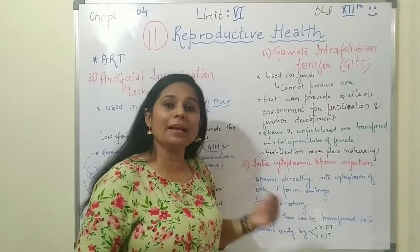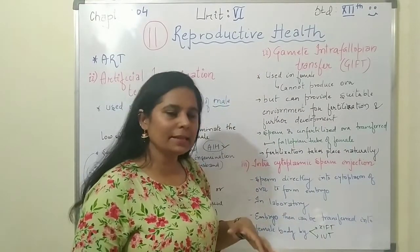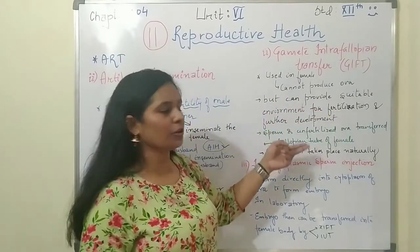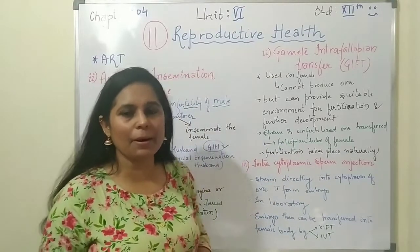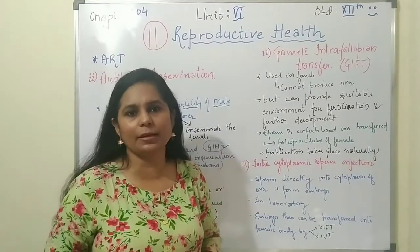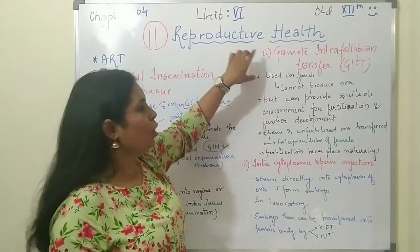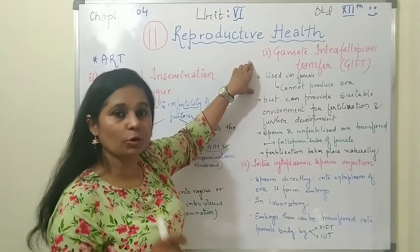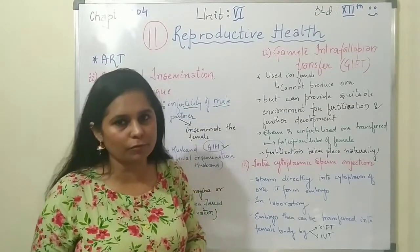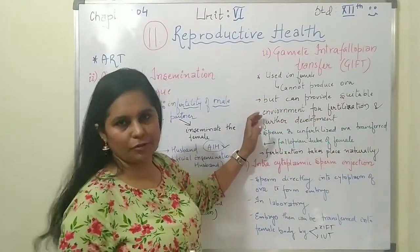This addresses infertility due to female inability to produce ova. However, the female can provide a suitable environment for fertilization and further development. Her uterus is normal and suitable for embryo development — she just cannot produce ova but can support the growth of the embryo.